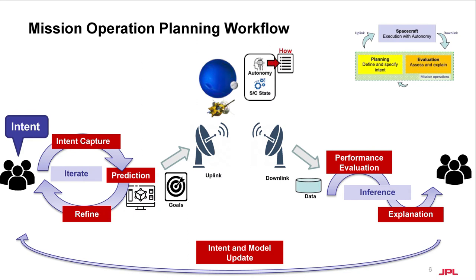Here's the mission operations planning workflow we propose for autonomous spacecraft, focusing on key knowledge engineering processes. On the left, we start with intent capture, where goals and key performance indicators are elicited from scientists, engineers, and operators. We then generally perform outcome prediction, where the team explores different scenarios and uncertainty conditions to understand possible outcomes and science trade-offs, which informs scope refinement. Once goals converge, they are uploaded to the spacecraft for execution. When data is downlinked, we go through performance evaluation, where scientists and engineers analyze data to estimate state through inference and evaluate autonomy performance, comparing with the prediction data, which then informs intent and model update, where goals and models are refined according to the data from the spacecraft and performance analysis.